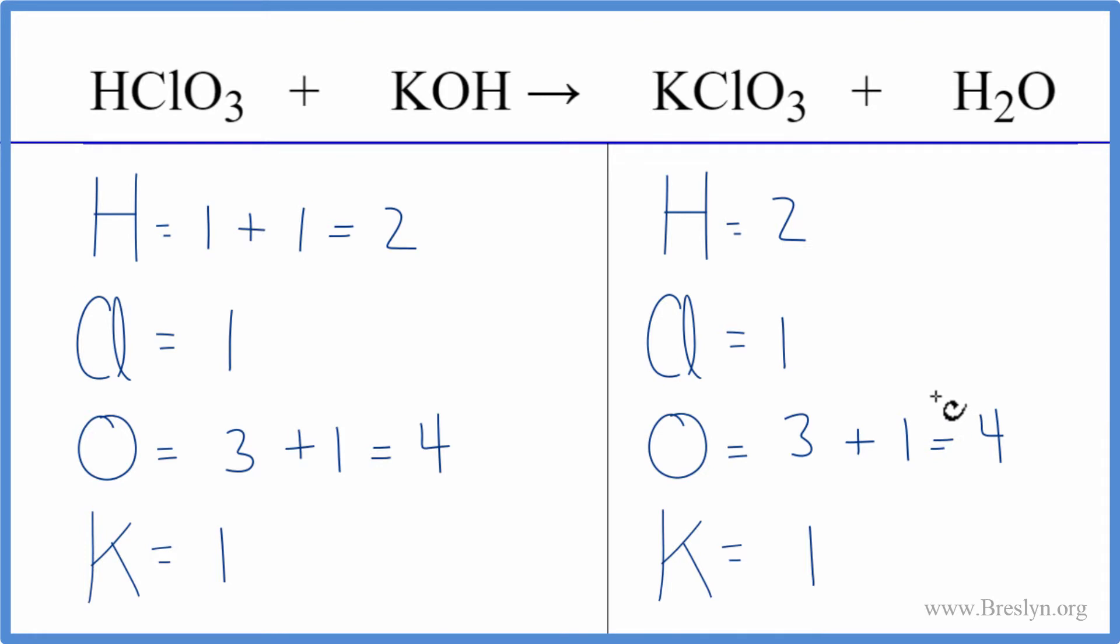Where people have problems with an equation like this is they'll count this H, and then they'll forget this one, or they'll count these oxygens here and forget this oxygen here. And when you do that, it becomes very difficult to balance.